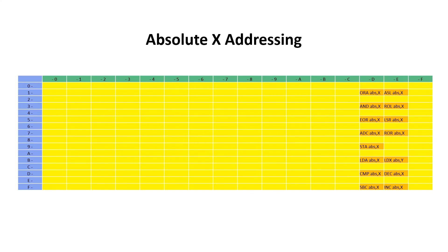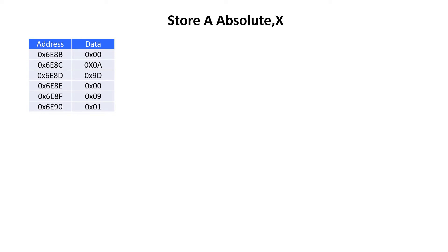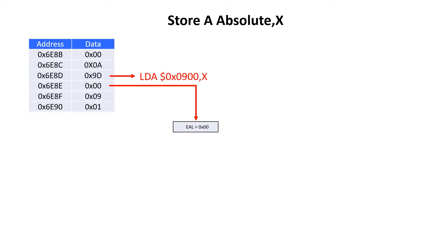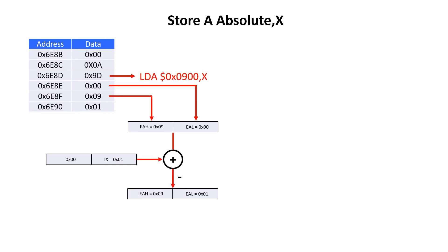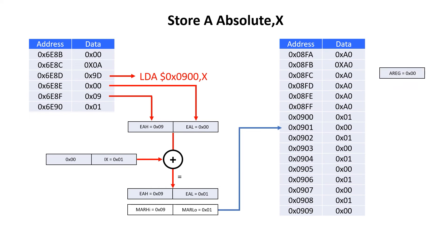Here are all the instructions that use absolute X addressing. Walking through an example with the store A instruction: the opcode is 9D and we can see one stored at 6E8D. After interpreting the instruction, we transfer the 0 at 6E8E into our EAL register variable, then store the 09 at 6E8F into our EAH register variable, giving us the base address 0900 hex. We offset that by the value in IX, making IX a 16-bit value with the upper 8 bits set to 0, then add it to EAL and EAH. The MAR now points to 0901, and we take the value in the A register — which is 0 — and store it at that location.